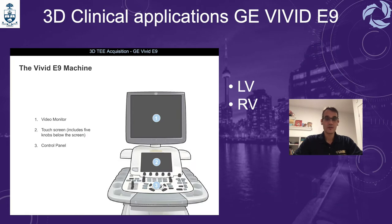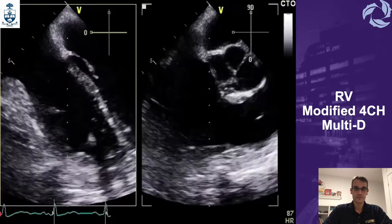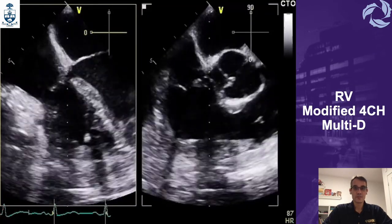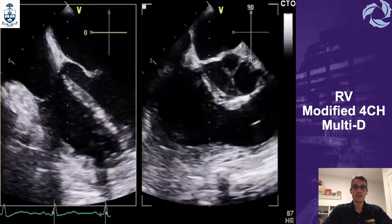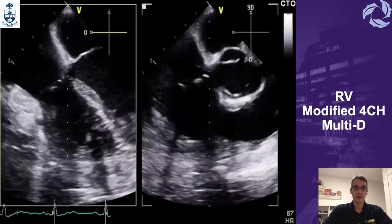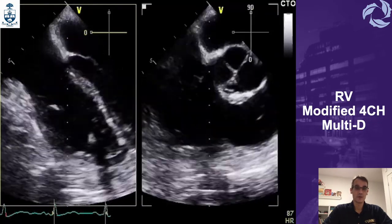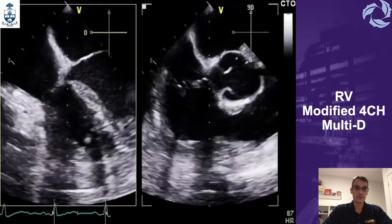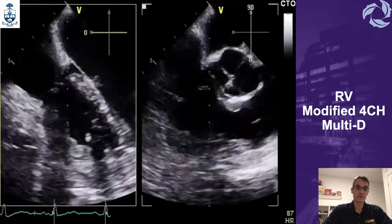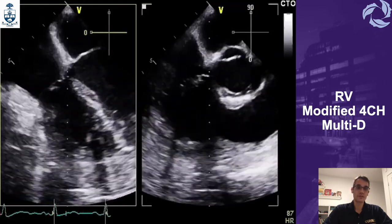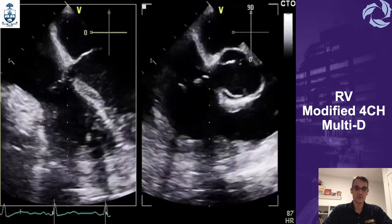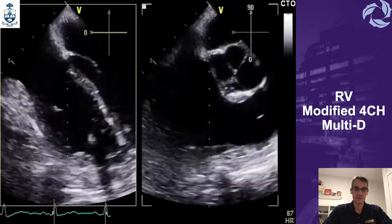Now we are going to do the same thing using the GE Vivid E9. Using Multi-D is going to be equivalent to X-Plane. In this example, we use it over the right ventricle, and we can simultaneously see the same walls that were assessed using X-Plane on the Philips.